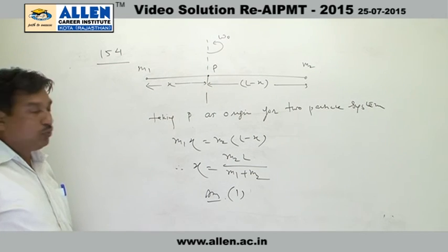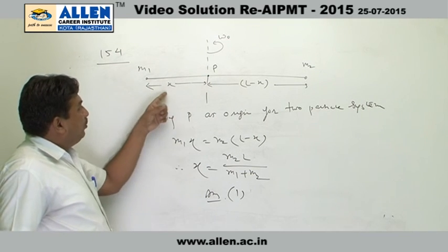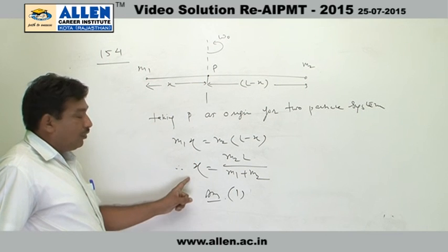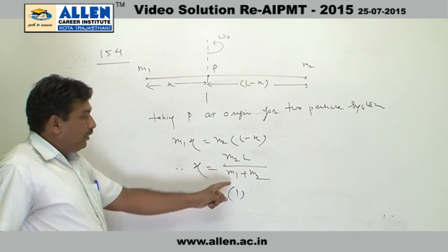So finally, M1 into x equal to M2(L minus x), and after solving, x equal to M2·L upon (M1 plus M2). So option 1 is the correct answer.